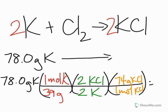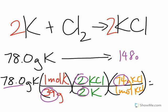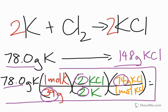So 78 divided by 39, times 2, divided by 2, times 74, gives us 148 grams of KCl. The only thing we need to keep track of now is significant figures. There's three significant figures there, three significant figures here. So that's our final answer. Again, it's a three-step process to figure out the mass of the products given the mass of the reactants. All right, we'll end it right there, and we'll see you soon.